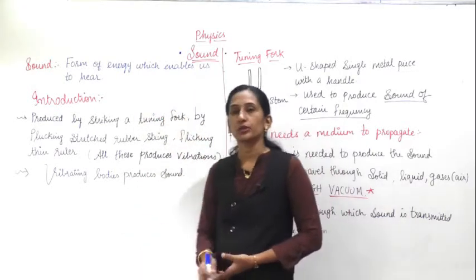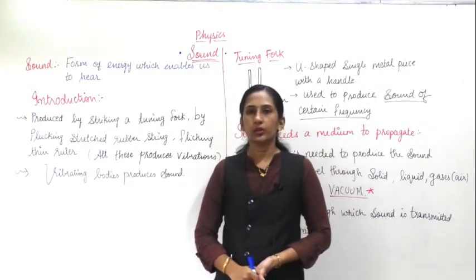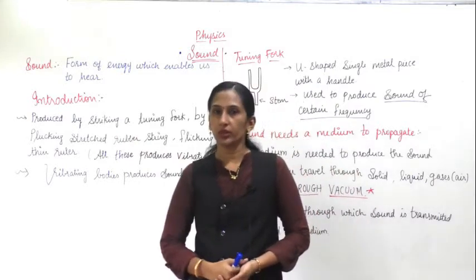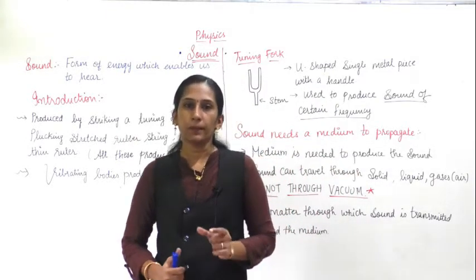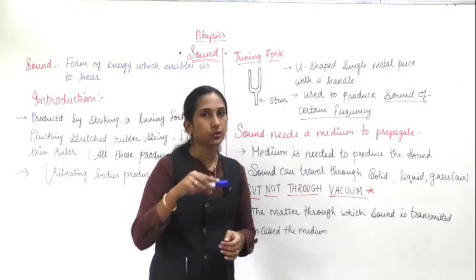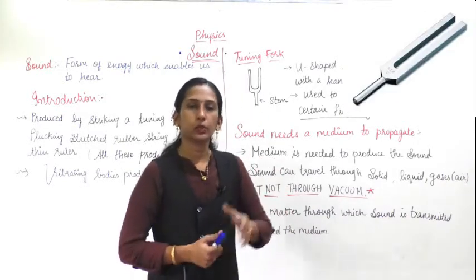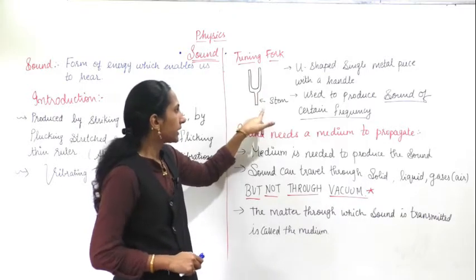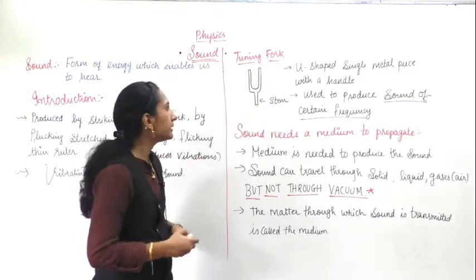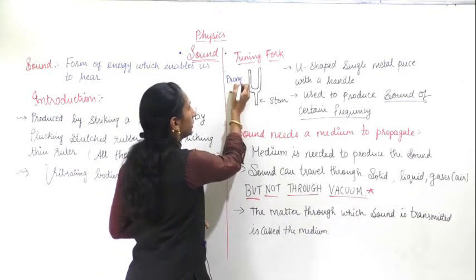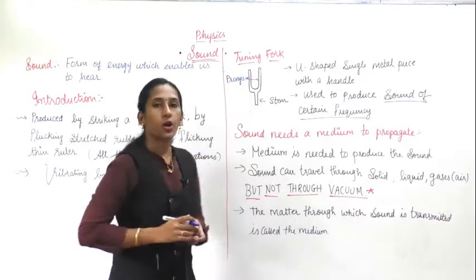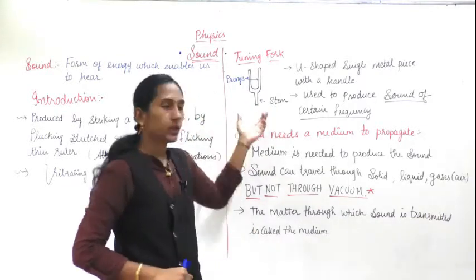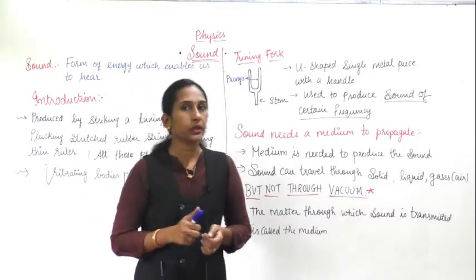Sound is produced by the striking of a tuning fork. What is a tuning fork? It is a U-shaped, single metal piece with a handle. If you look at a tuning fork, it is U-shaped with a handle and it is made entirely of metal. It has two arms called prongs, and the handle part is called the stem of the tuning fork.